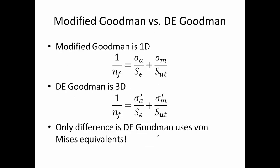Modified Goodman versus Distortion Energy Goodman. If you remember your one-dimensional Modified Goodman, we simply had the reciprocal relation for fatigue factor of safety, related to some alternating stress and a mid-range stress relative to endurance strength and ultimate tensile strength. The three-dimensional version simply uses von Mises equivalents for the alternating part and the mid-range part. That's the only difference.